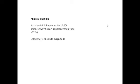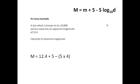Let's do an easy example to start with. A star, which is known to be 10,000 parsecs away, has an apparent magnitude of 12.4. Calculate its absolute magnitude. Using the equation here, plugging in the numbers, we have big M equals 12.4 plus 5 minus 5 times 4. So that's 17.4 minus 20. Do it on the calculator, and we get M equals minus 2.6.